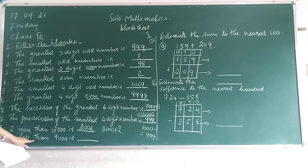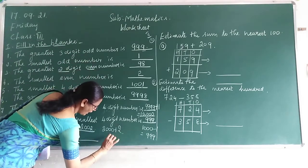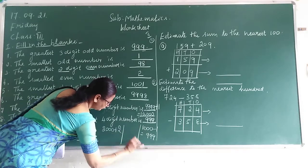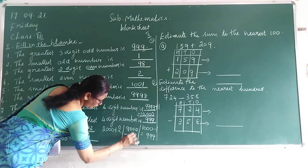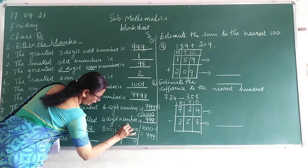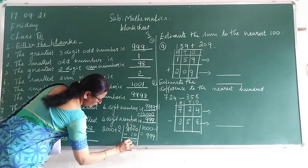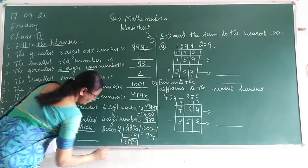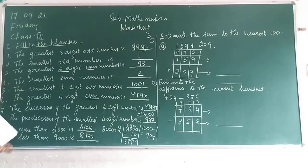10 less than 9,000 is dash. 9,000 minus 10. We borrow from the tens place — 10 minus 1 is 9, and we get 8 in the thousands place. So 9,000 minus 10 is 8,990.